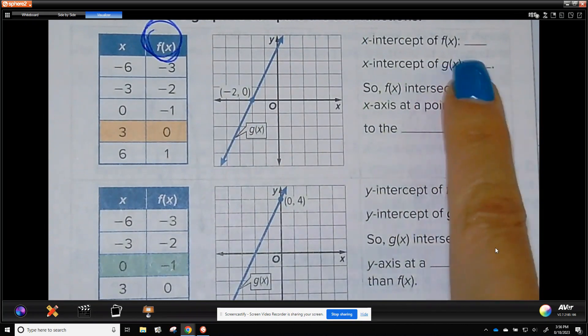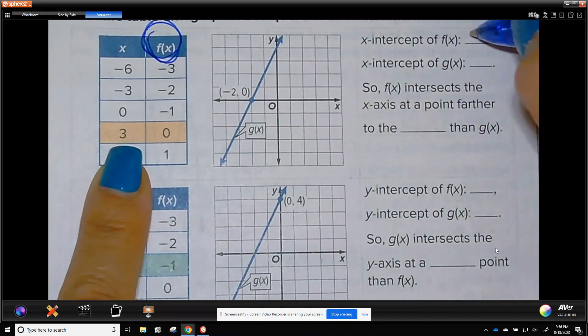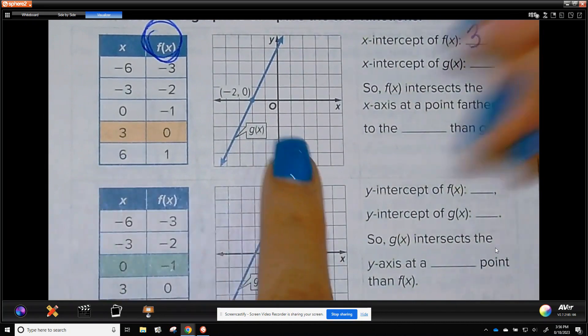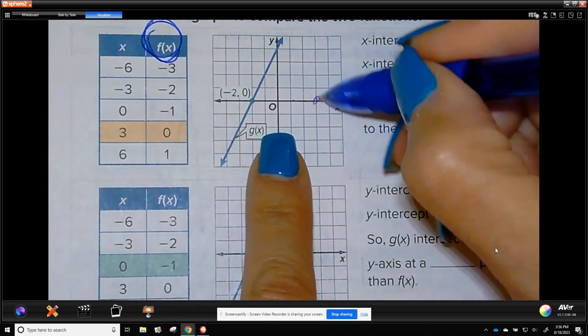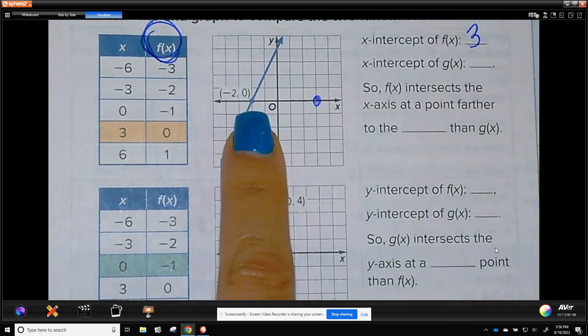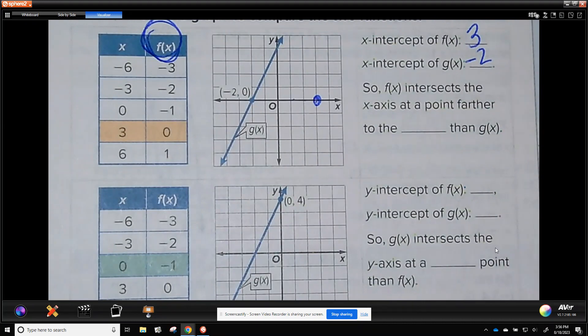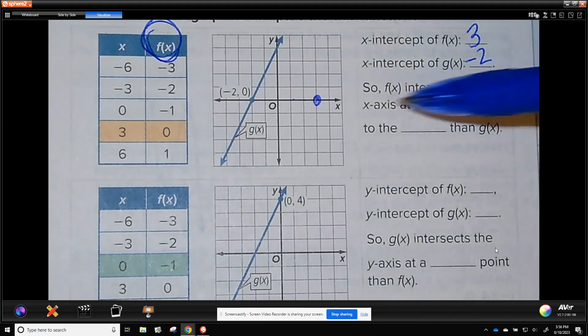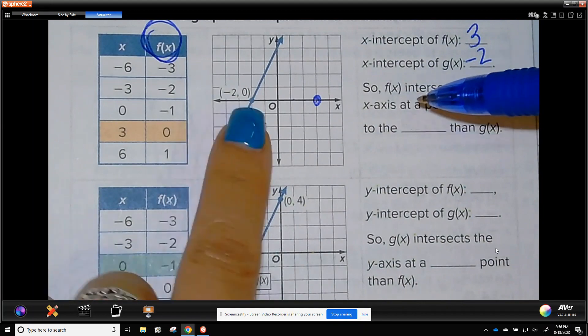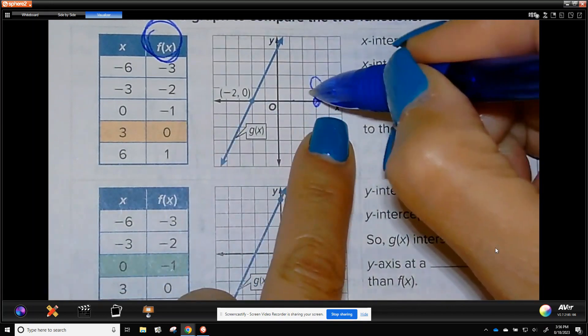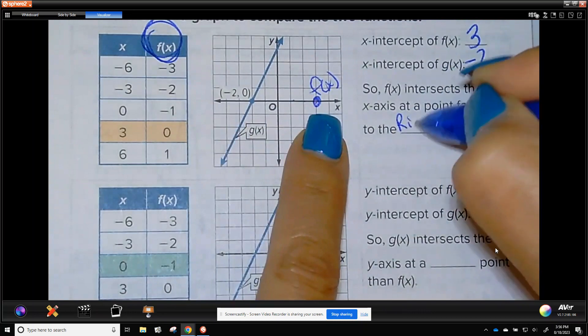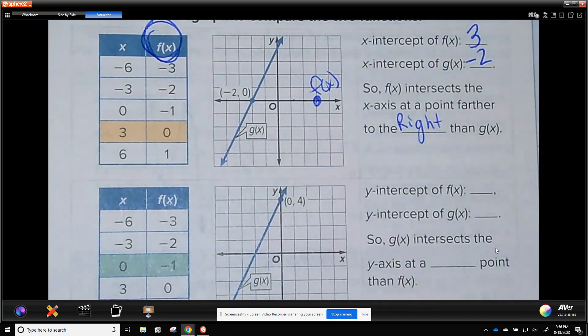So the x-intercept of f is highlighted for us. It is 3. So I'm just going to put that here because we're going to compare the two. Our x-intercept of g is negative 2. So f of x intersects the x-axis at a point farther to the, so remember this is f of x to the right, then g of x.